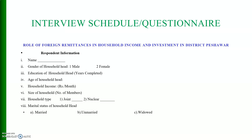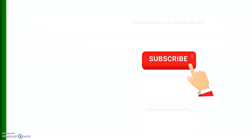The questionnaire is long but I have just copied preliminary information from it. I want to set a structure for data analysis in SPSS. These are the respondent information fields: name, gender of household head (1 for male, 2 for female), education of household head in years, household head age in years, household income in rupees per month, household size (number of members), type of household (joint, nuclear, or extended), and marital status. Some of these questions are qualitative and some are quantitative.